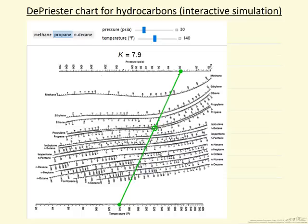This interactive simulation demonstrates how to use the De Priester chart for hydrocarbons. The idea is we can quickly use a nomograph to calculate the K values.